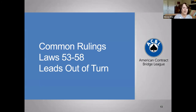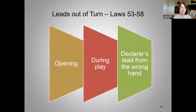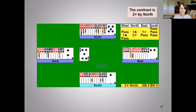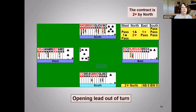Let's get into our first section of discussion of laws 53 to 58, leads out of turn. We're going to talk about leads regarding opening during play and then declarer's lead from the wrong hand. Here's our situation: the contract is two hearts in the north, so we are expecting east to lead, and west leads the five of spades. So we have an opening lead out of turn.